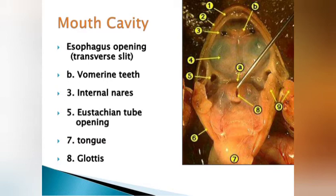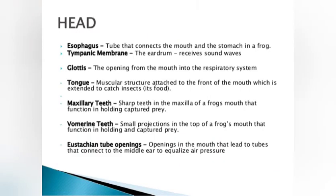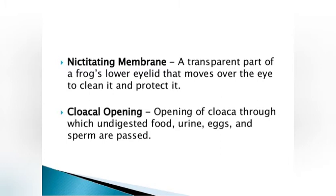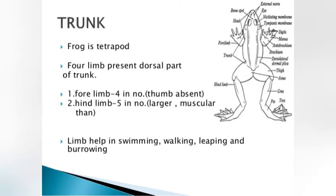The esophagus is the tube that connects the mouth and stomach. The tympanic membrane, or eardrum, receives sound waves. The glottis is the opening from the mouth into the respiratory system. The tongue is attached to the front of the mouth and extends to catch insects. Maxillary teeth are found in the frog's mouth for holding captured prey. The vomerine teeth and nictitating membrane are the transparent part of the frog's eyelid.